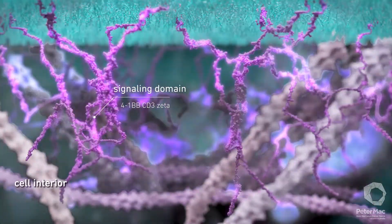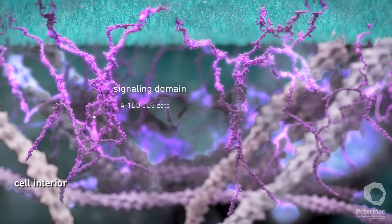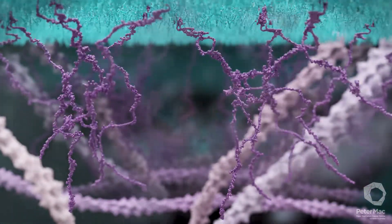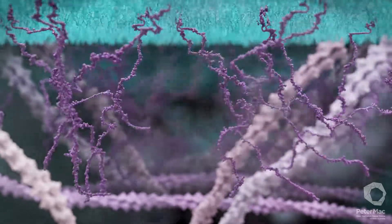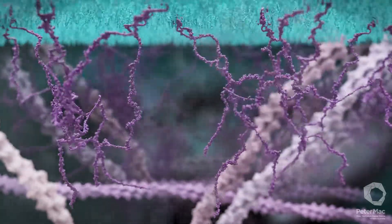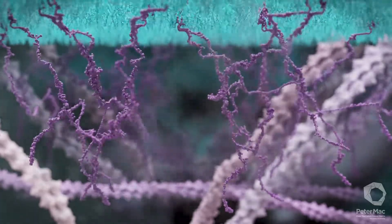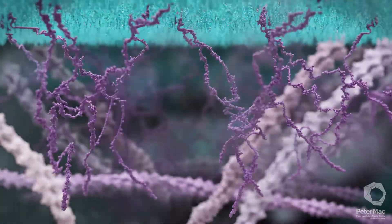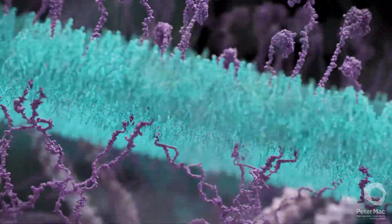The signaling domain inside the cell is similar to that in the naturally occurring killer T-cell receptor. Once the CAR T-cell is bound, CAR signaling domains begin a chain of events which activates its killer function to destroy cancer cells.